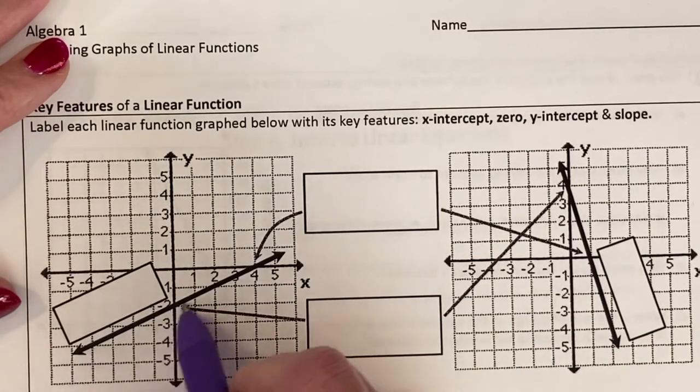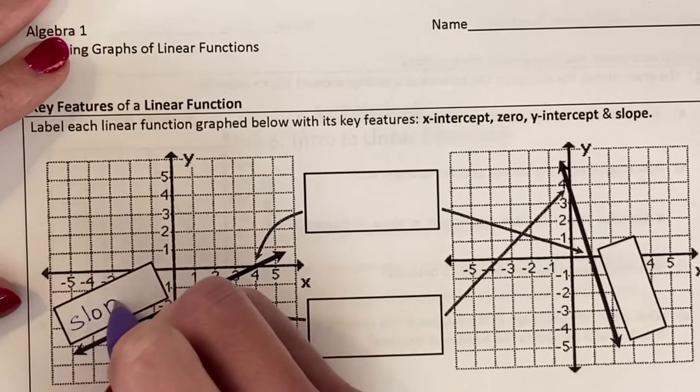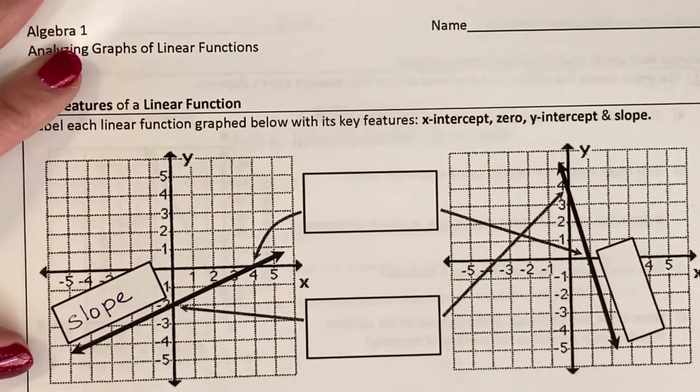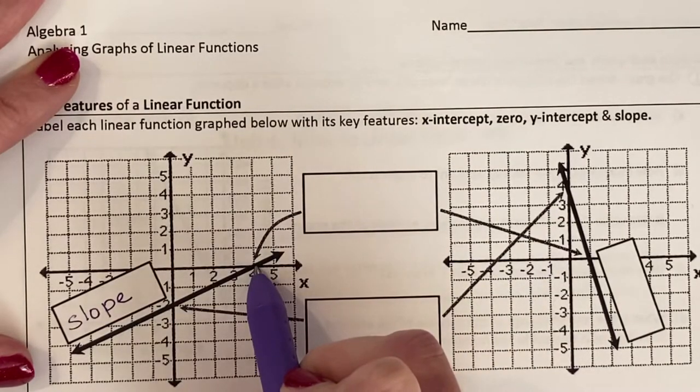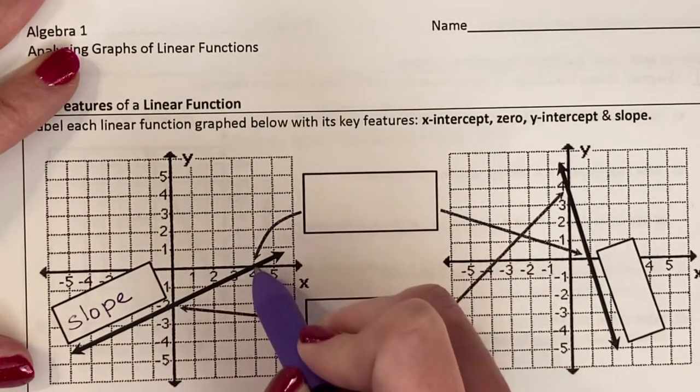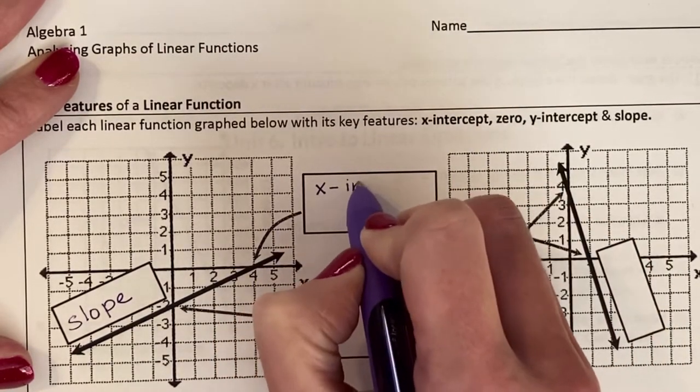This right here is talking about the slope of the line. This would be a positive slope, rather a little more shallow than steep. This right here is the x-intercept. This is where it crosses the x-axis.